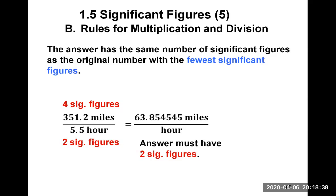For example, if we are calculating speed and dividing 351.2 miles by 5.5 hours, these two numbers are measurements. The first number has four significant figures and the denominator has two significant figures. When you multiply them in your calculator, you get 63.854545 miles per hour. We have to take into account the least number of significant figures, which is two, from 5.5 hours.